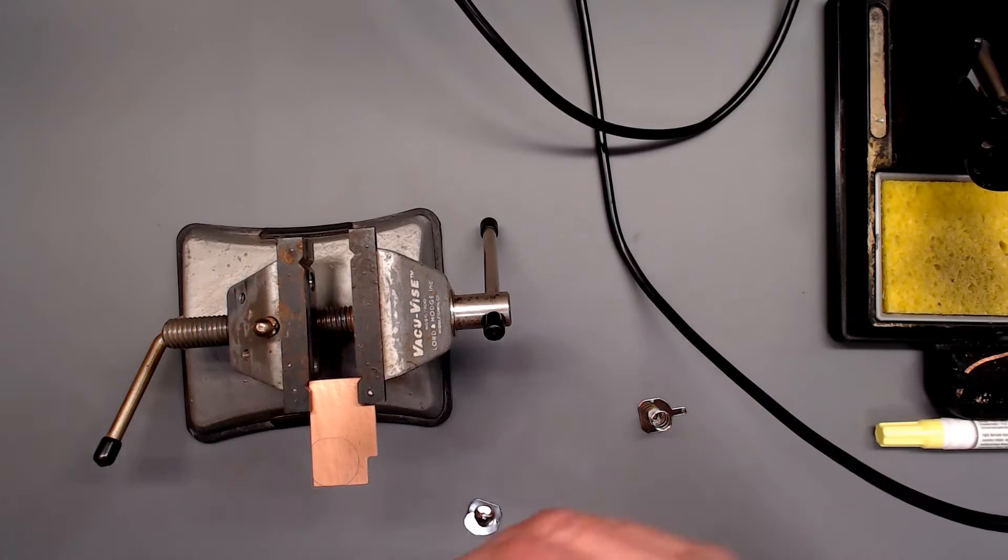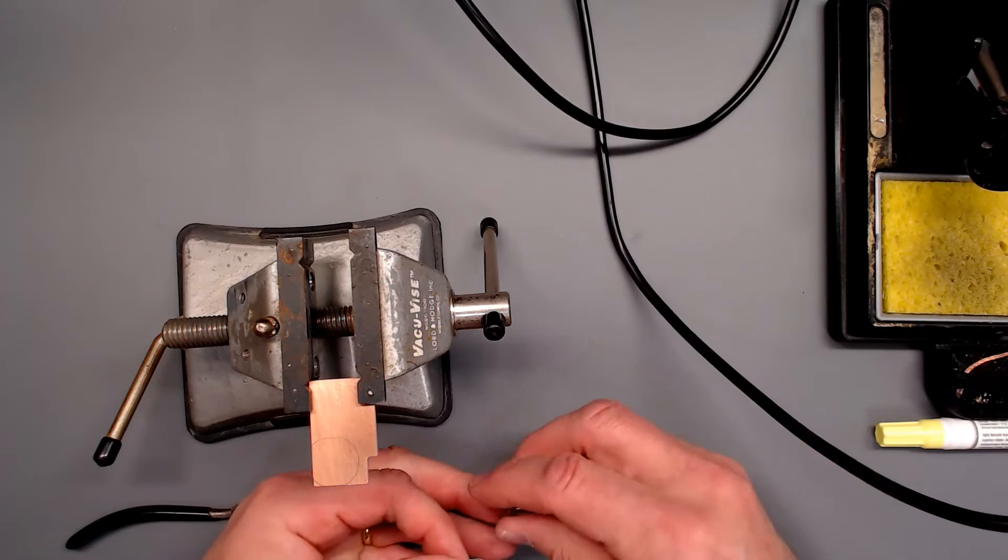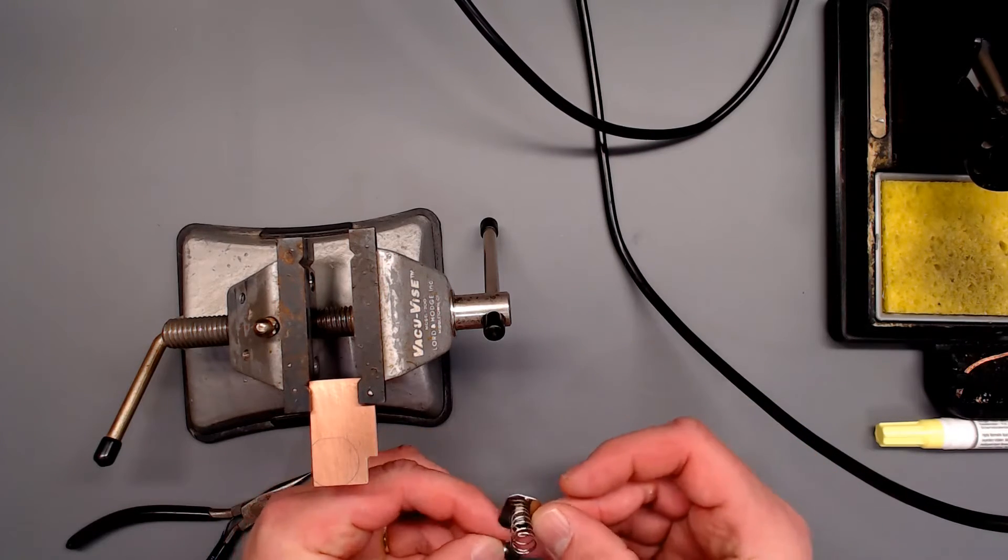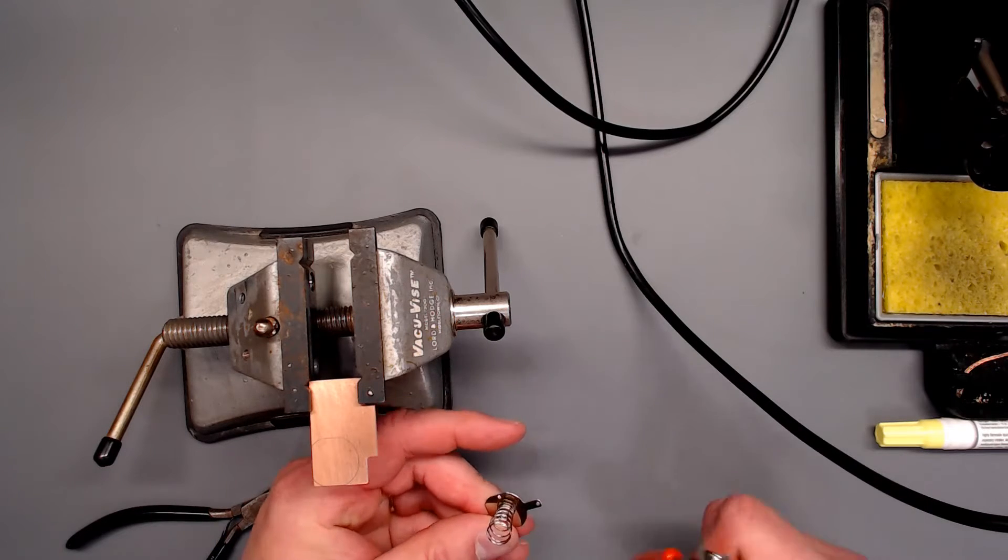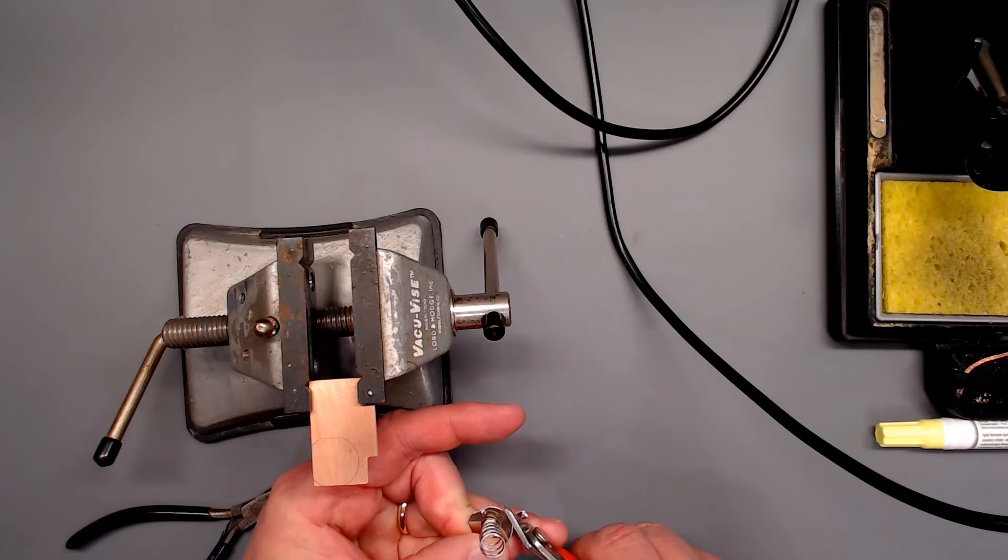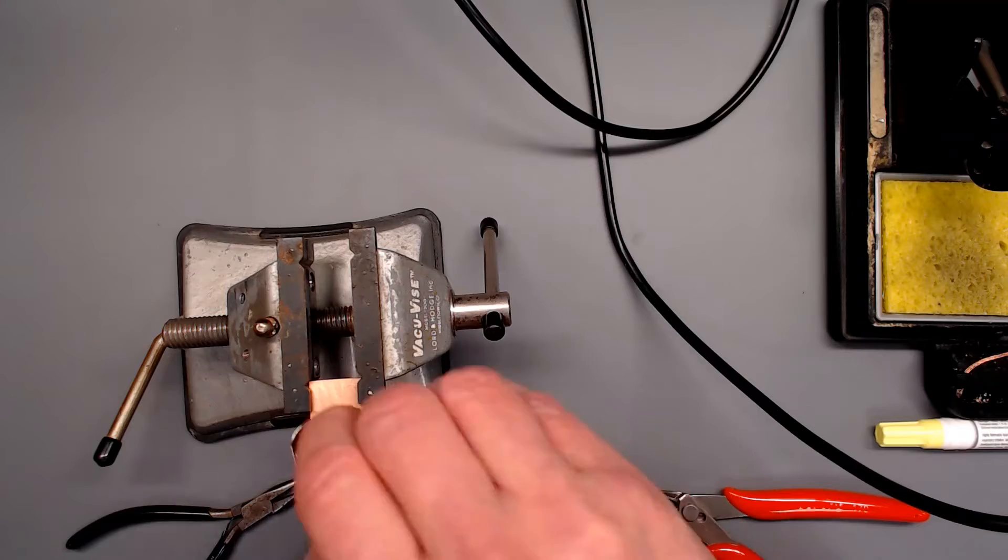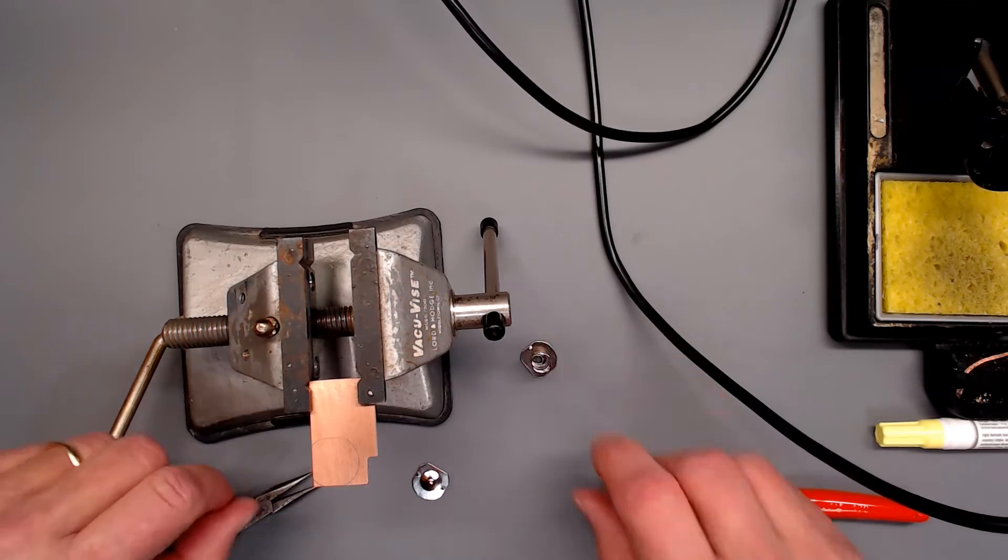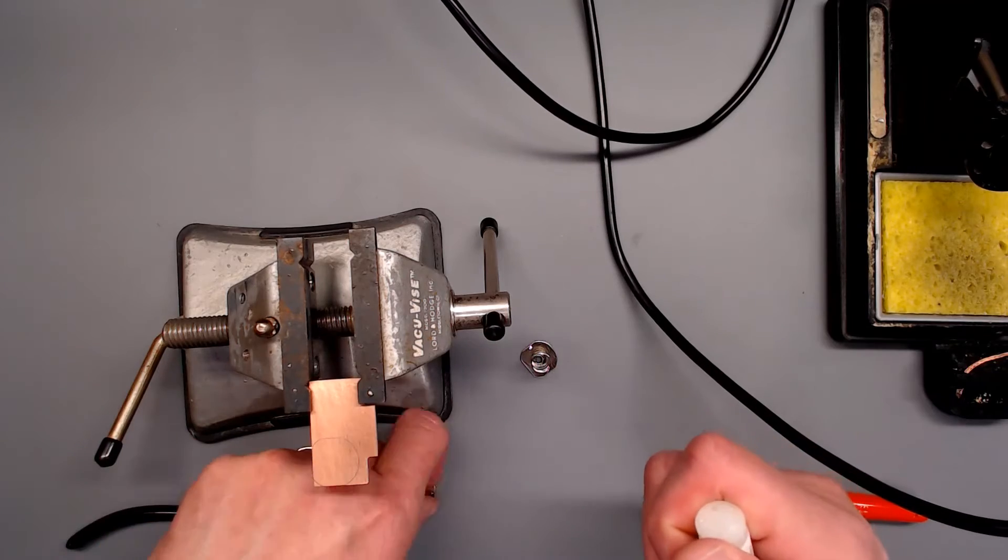You will also need to hold this thing in place while you're doing it. Now the clips naturally come, or the contacts come, with this extra tab at the top. I just use an older pair of side cutters, line it up on there where I want to cut it, and it clips right off.